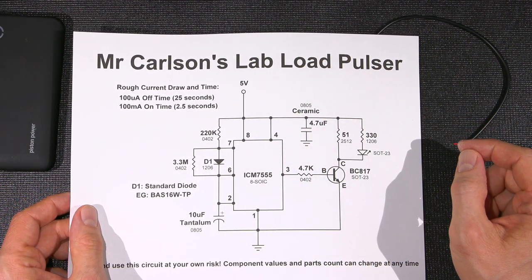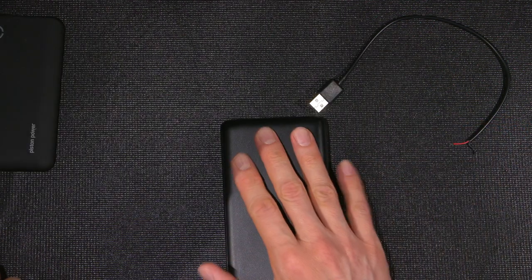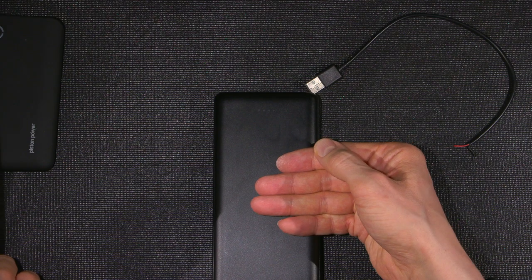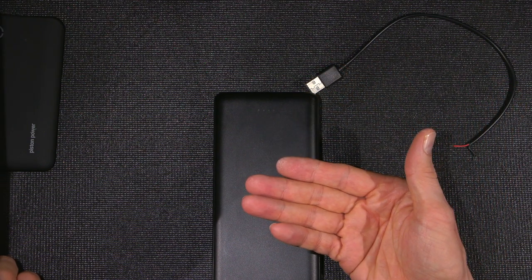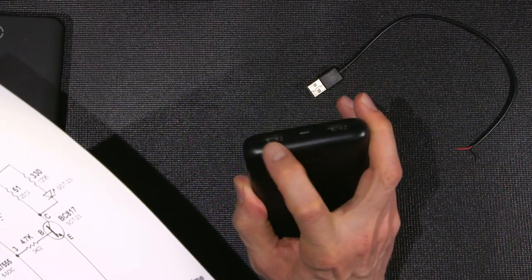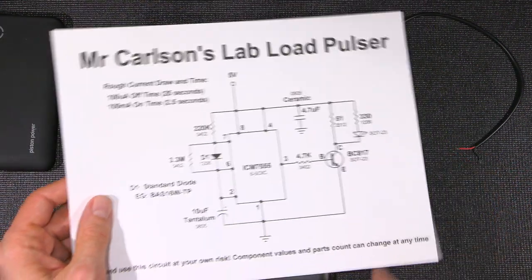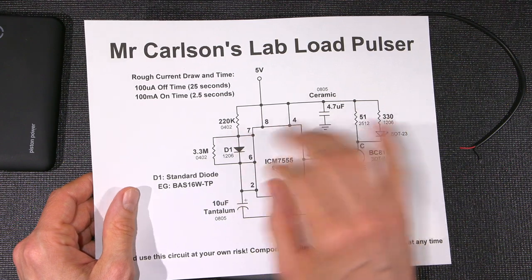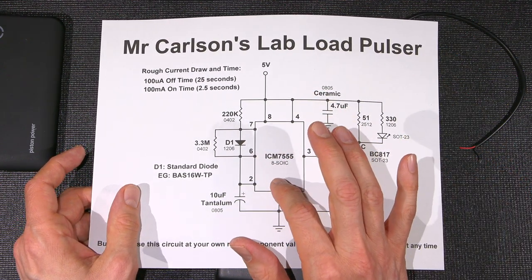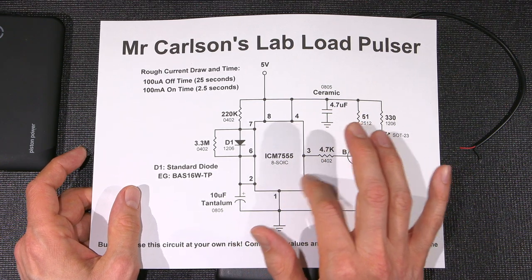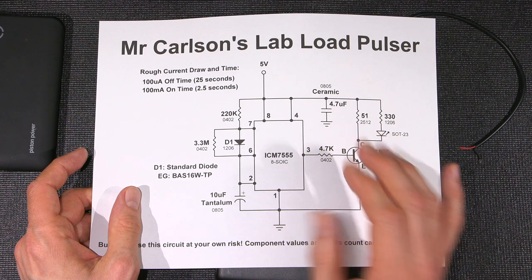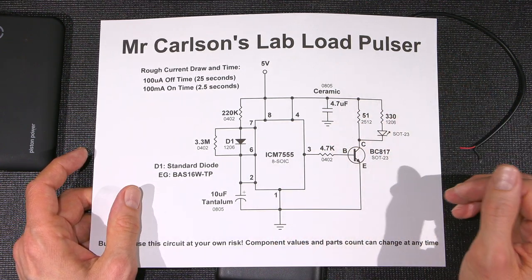Decoupling capacitor up here just to keep any noise, usually these things have a switching supply inside. Some form of switcher to take the, not very much, but it bumps up 3.7, 4.2 volts to about 5 to these jacks right here. So there's a little bit of switching action going on. This just keeps noise off the line so that it doesn't affect anything here. For those of you that are familiar with the 555 timer, usually pin 5 has a bypass on it. The ICM 7555 does not need that bypass, so there's no pin 5 shown here. And that's it.